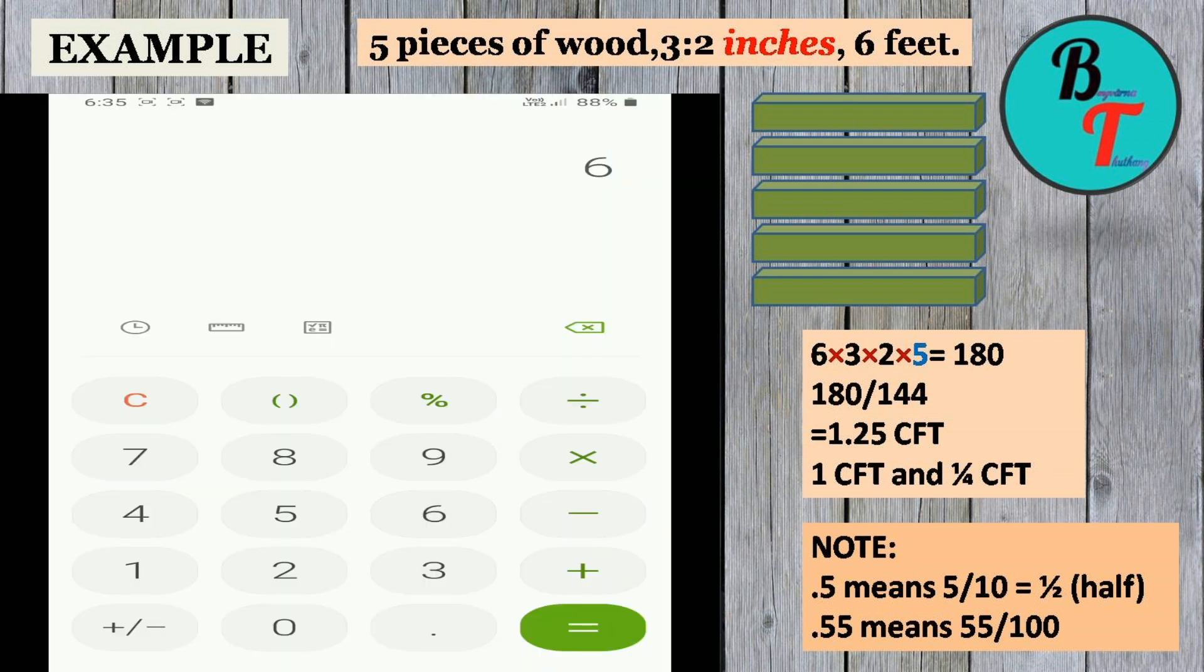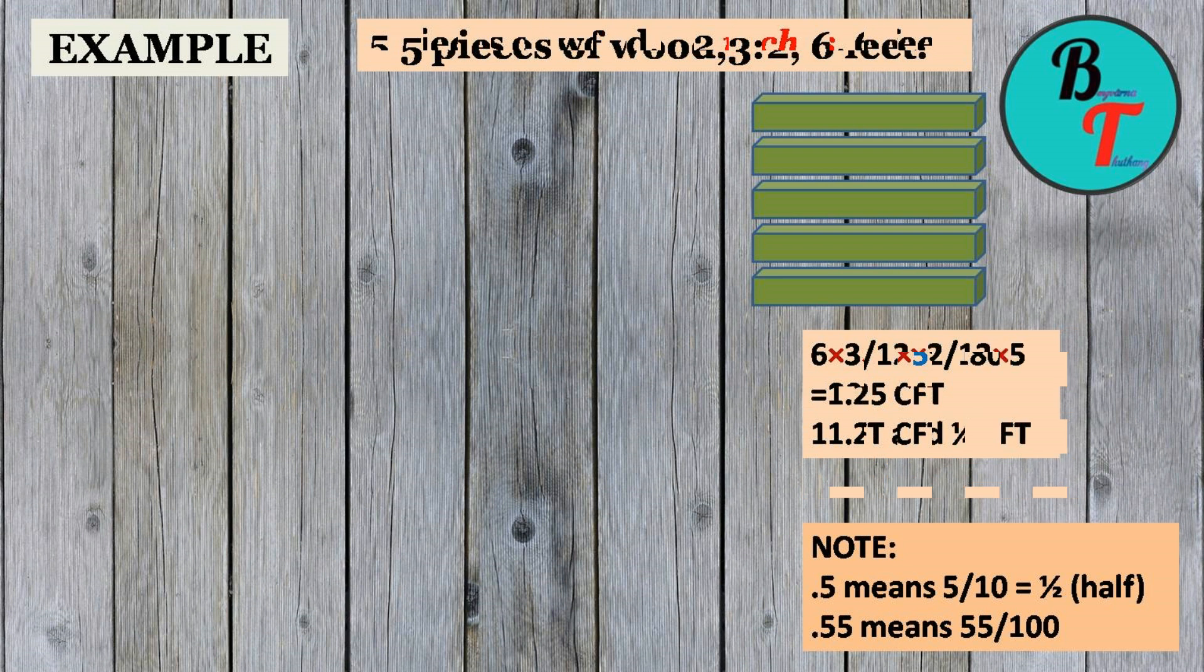6 into 3 into 2 into 5 equals 180. 180 divided by 144 equals 1.25. And for our next process let us check it in our calculator.